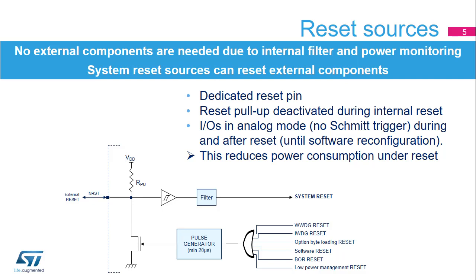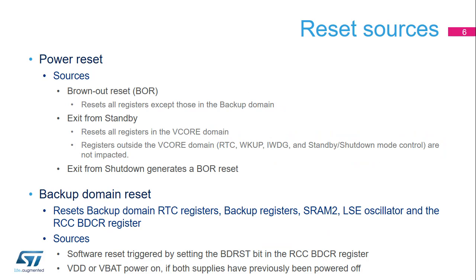Additionally, all IO pins are placed in analog mode during and after reset to eliminate power consumption through the Schmidt trigger when the IOs are floating under reset and before software initialization. The second type of reset is the power reset, the brownout reset, or BOR. It resets all registers except those in the backup domain powered by VBAT, which contains the RTC and the external low-speed oscillator. When exiting standby mode, all registers powered by the regulator are reset.